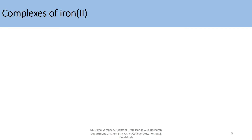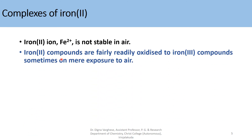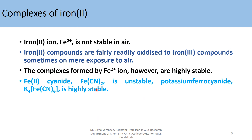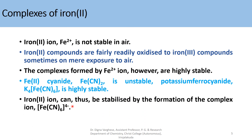Here we are dealing with iron(II) ion. Iron(II) compounds are fairly readily oxidized to iron(III) compounds, sometimes on mere exposure to air. However, the complexes formed by iron(II) ion are highly stable. For example, Fe(CN)2 is unstable on its own, but potassium ferrocyanide K4[Fe(CN)6] is highly stable. Iron(II) ion can thus be stabilized by the formation of the hexacyanoferrate(II) complex.